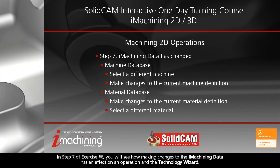In step 7 of exercise number 6, you will see how making changes to the iMachining data has an effect on an operation and the Technology Wizard.